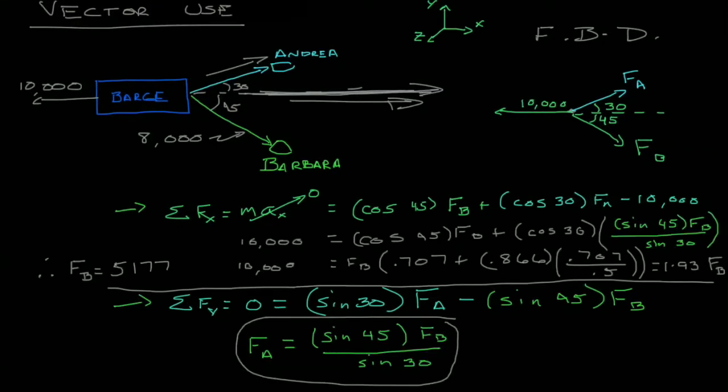Well I hope you've been able to find out that force B was a little over 5177. You can see what I've done here where I said force of A, I've gotten, I've isolated that, and that equals the sine of 45 times force B, sine of 30.